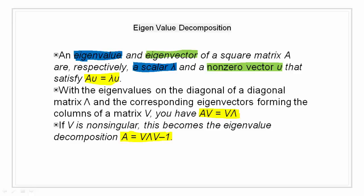If V is non-singular, this becomes the eigenvalue decomposition. That is, A equals V delta V to the power minus 1.